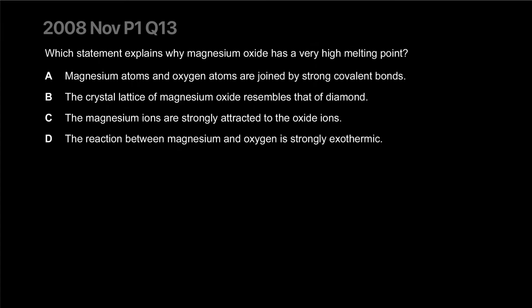Which statement explains why magnesium oxide has a very high melting point? One option says magnesium atoms and oxygen atoms are joined by strong covalent bonds — but it's ionic! They're ionic bonds, not covalent.